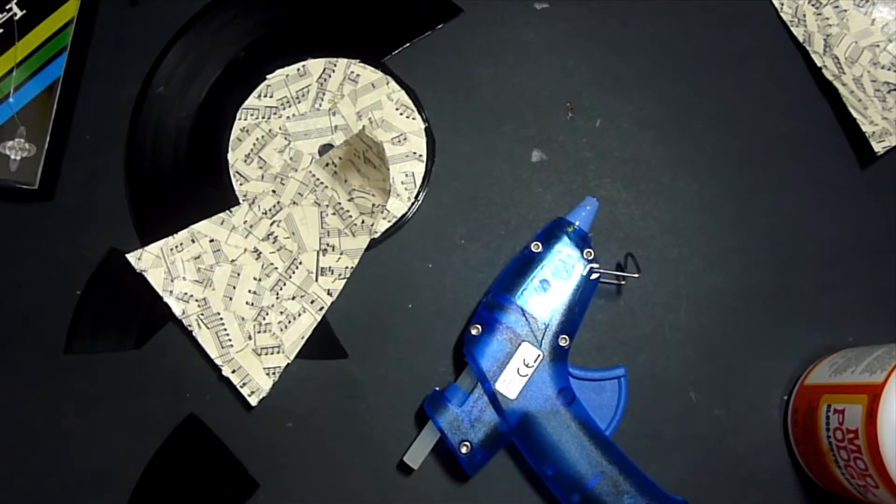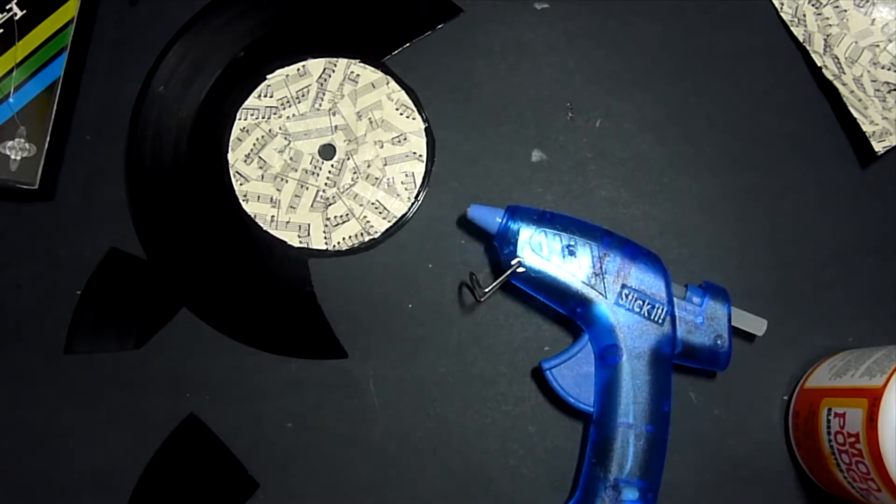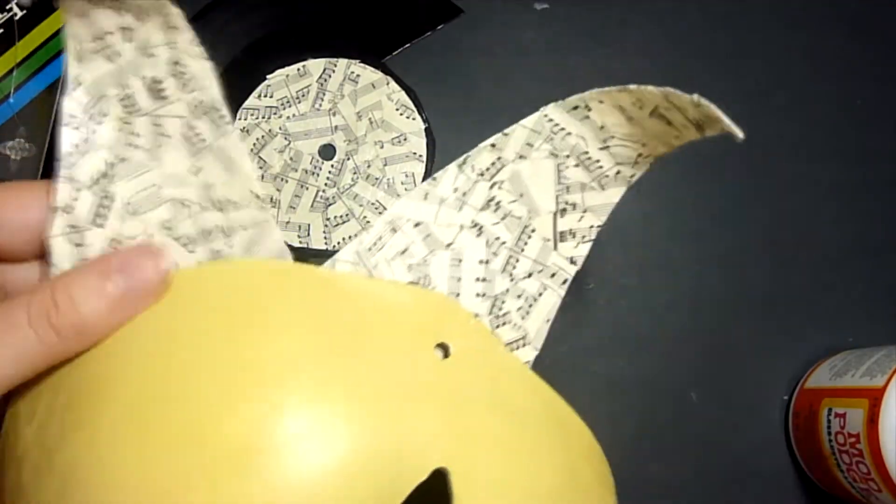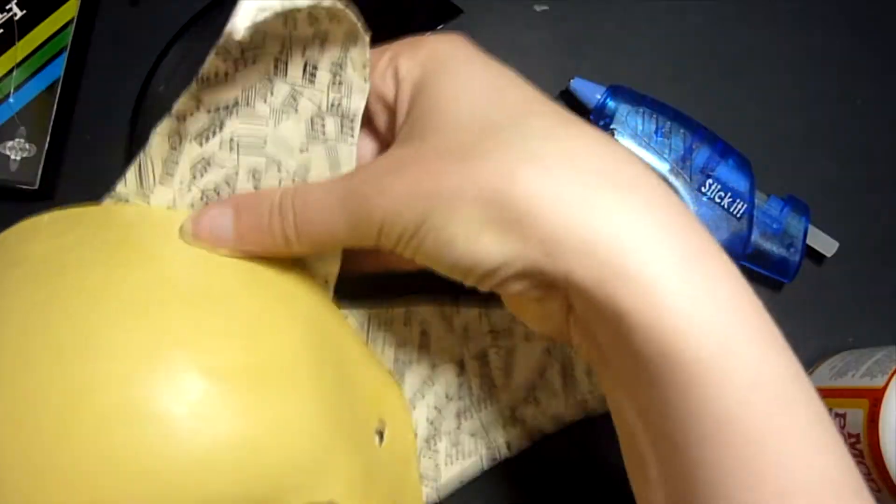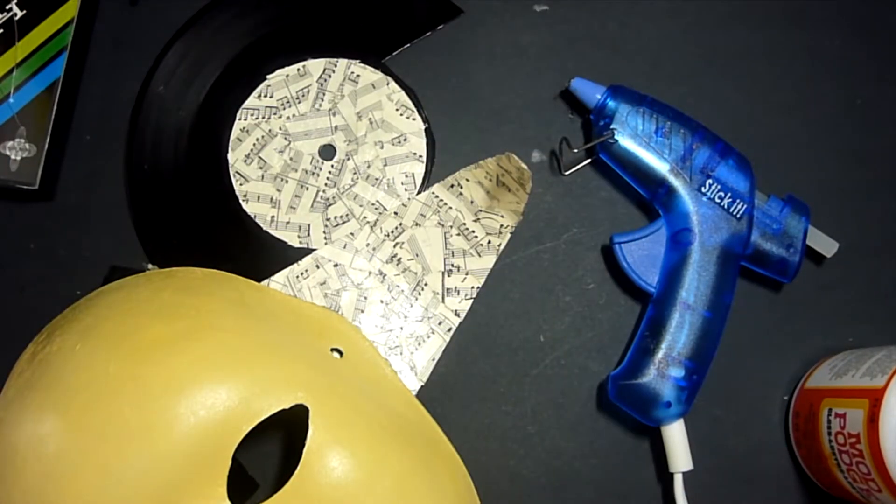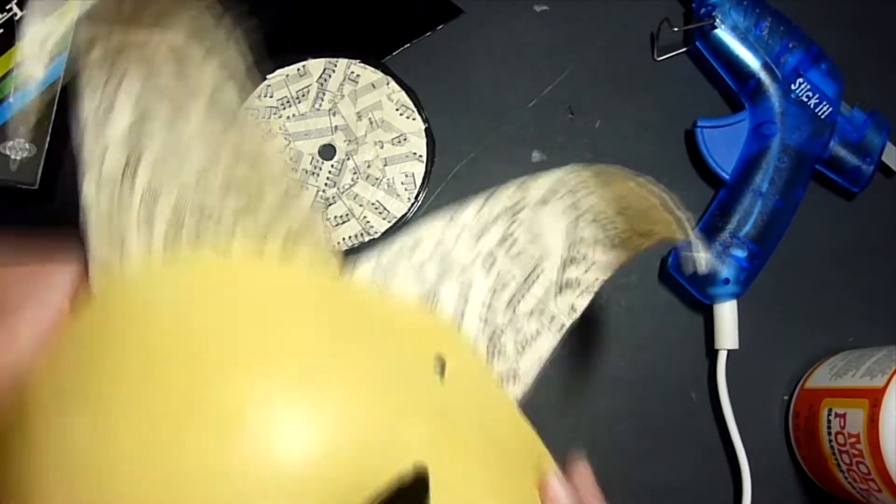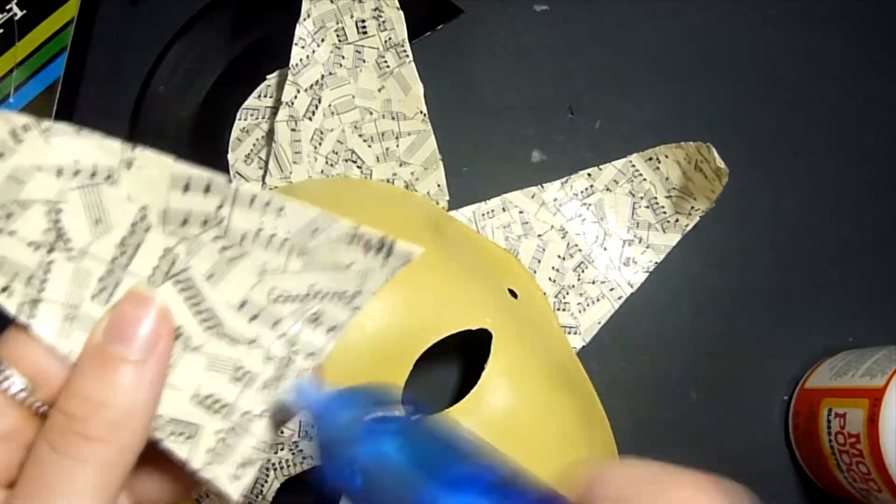To attach the horns and the record and all the other bits to the mask itself, I use my hot glue gun. This is quite tricky because I find hot glue gun quite annoying to work with. It gets quite stringy as soon as it starts to dry and that string stuff gets everywhere. Also it dries quite quickly so you've got to be quite quick in applying it.